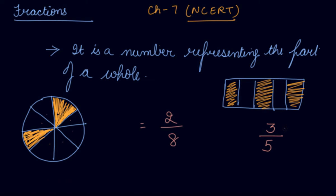The numerator is 3. The numerator tells us the number of equal parts which have been taken out.